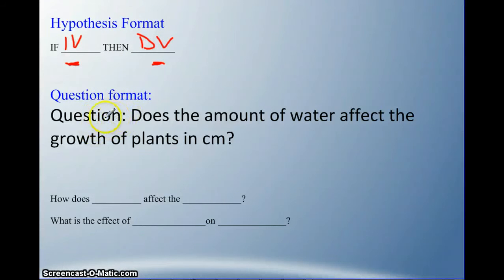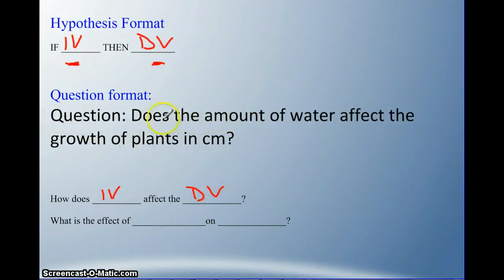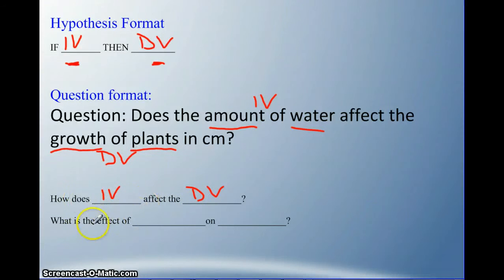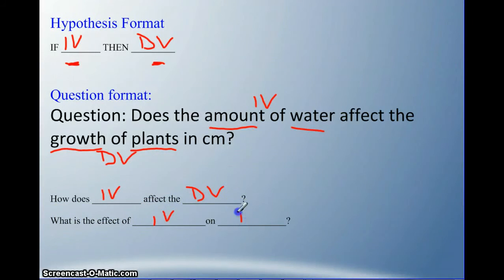The question. Does the amount of water affect the growth of plants in centimeters? We want to ask: how does the independent variable affect the dependent variable? We can identify these in our question: how does the amount of water affect the growth of plants — that's our dependent variable. The question needs to contain both the independent and dependent variable. Here's another format: what is the effect of your independent variable on your dependent variable?